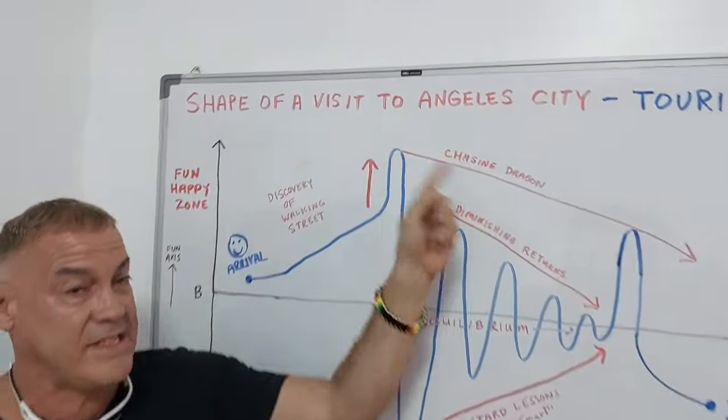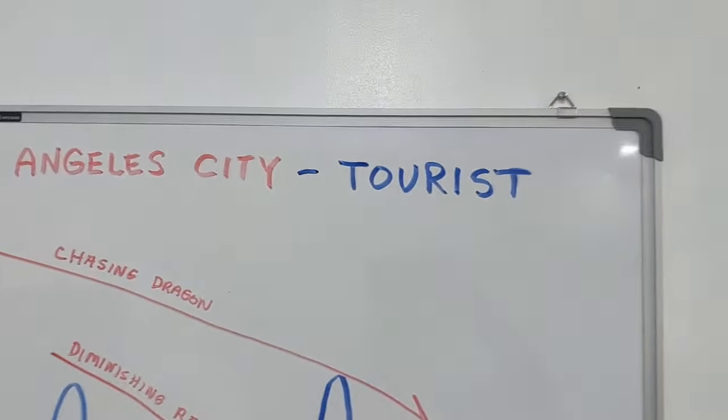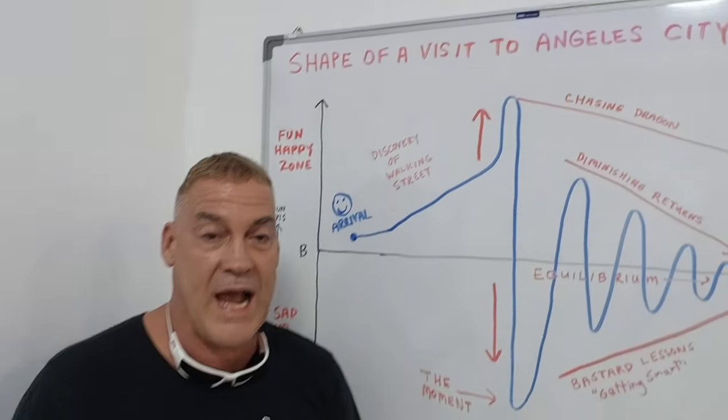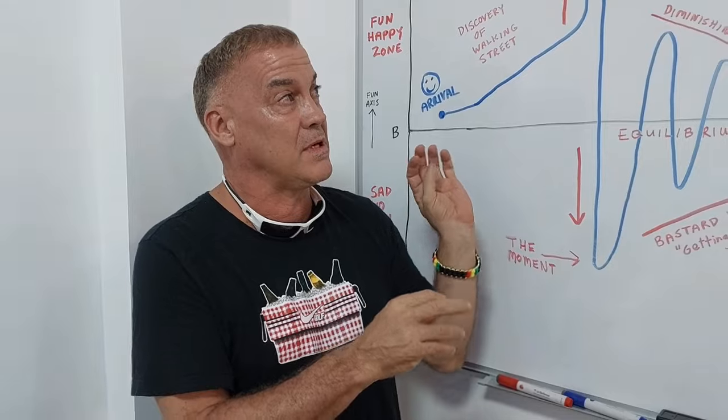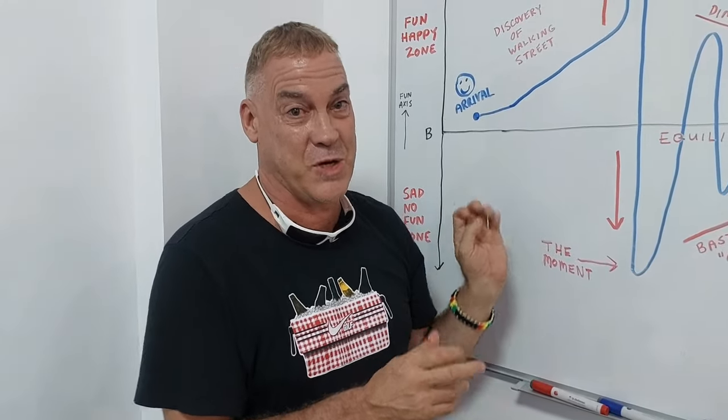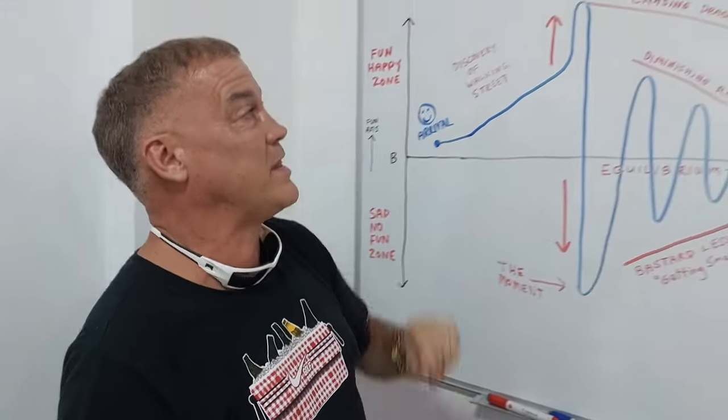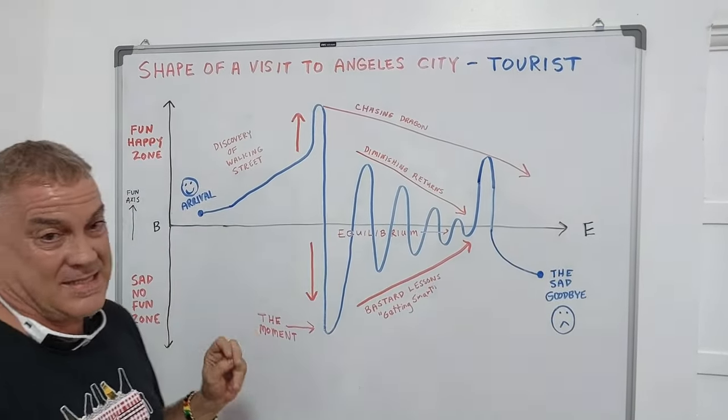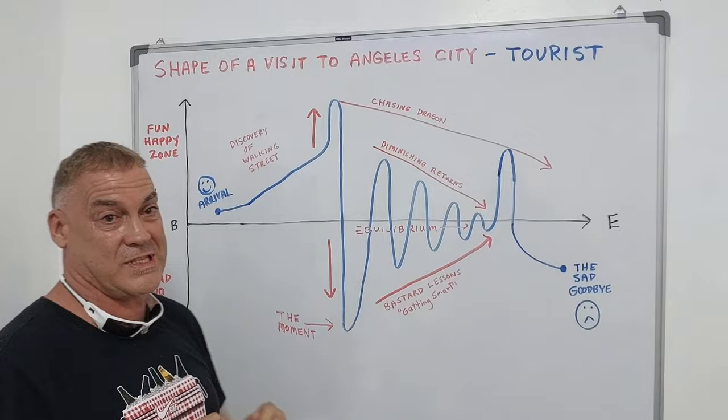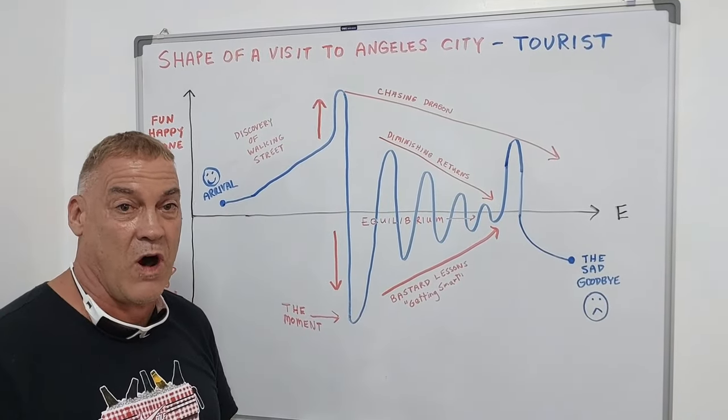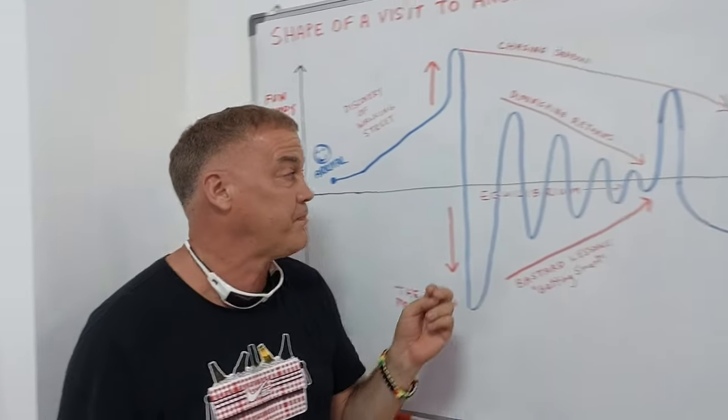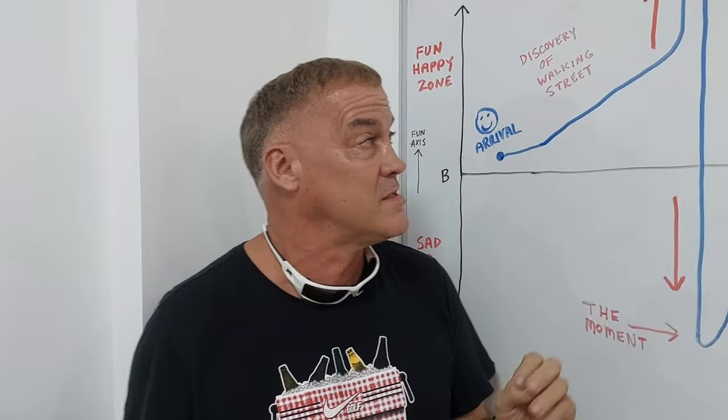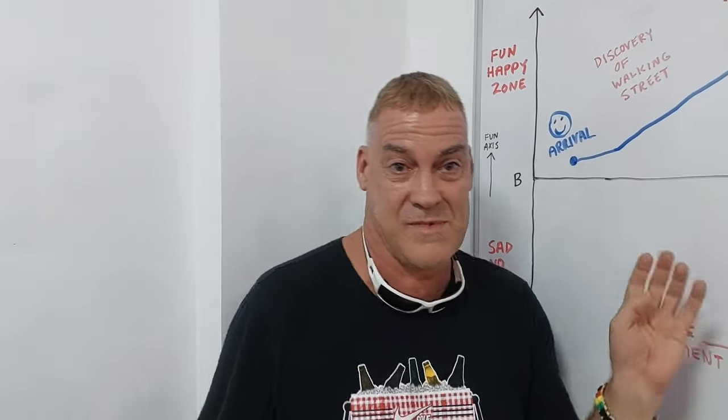Shape of a visit to Angeles City tourists. This is what the shape looks like for a tourist when they're coming to Angeles City. Now this is for first timers to Angeles City. We've all come here for the first time, so I want to give you a little rundown on what this looks like here.